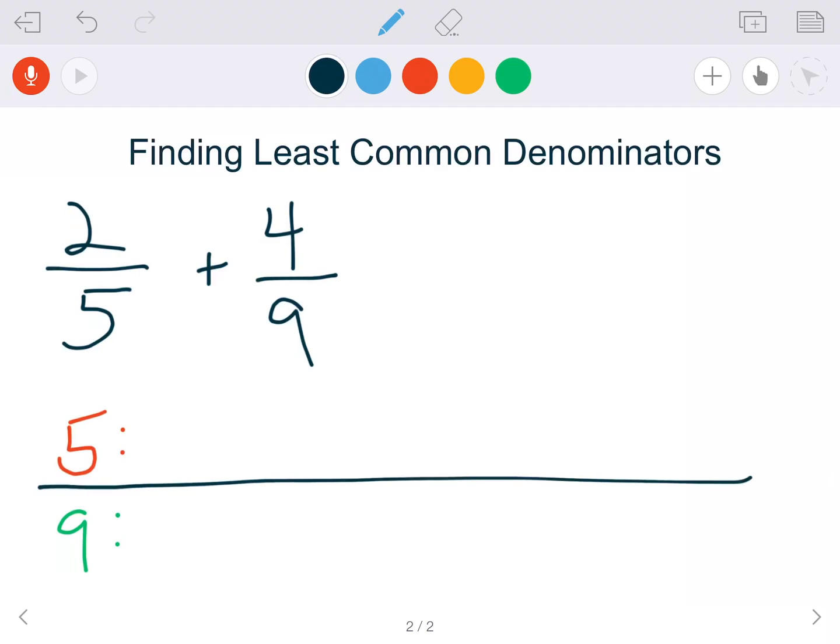Now we're going to skip count these numbers, meaning count by 5s: 5, 10, 15, 20, and then we'll count by 9s: 9, 18, 27, 36, so on and so forth. We'll list their numbers here.